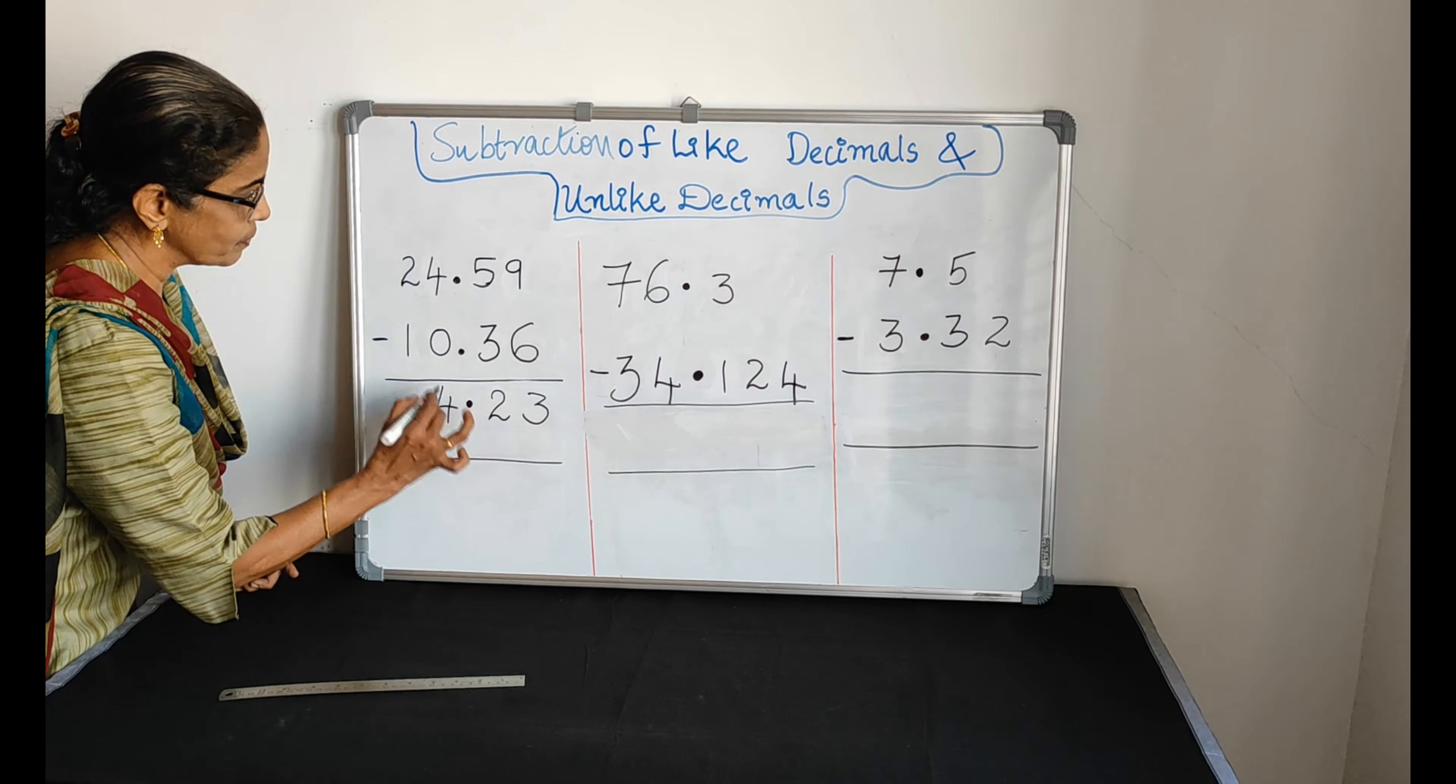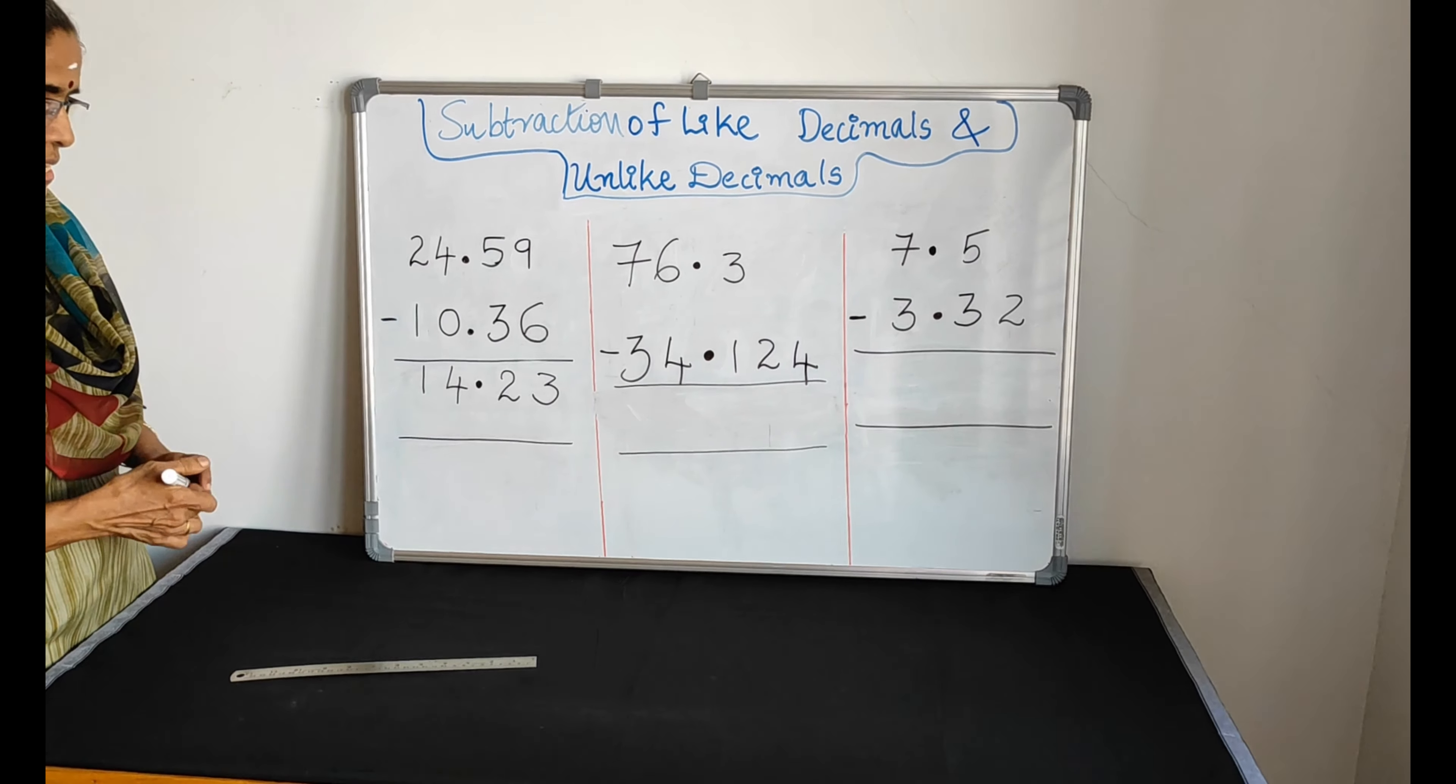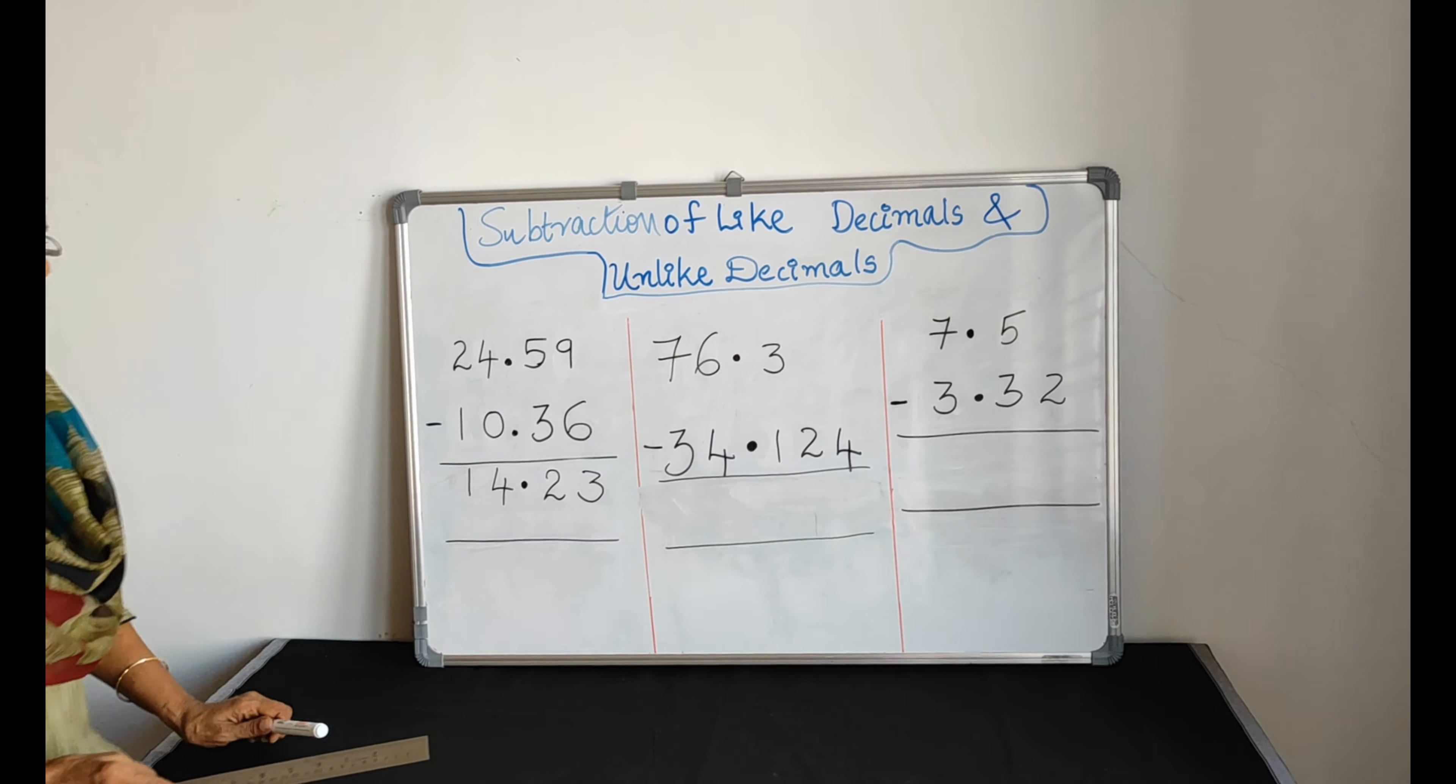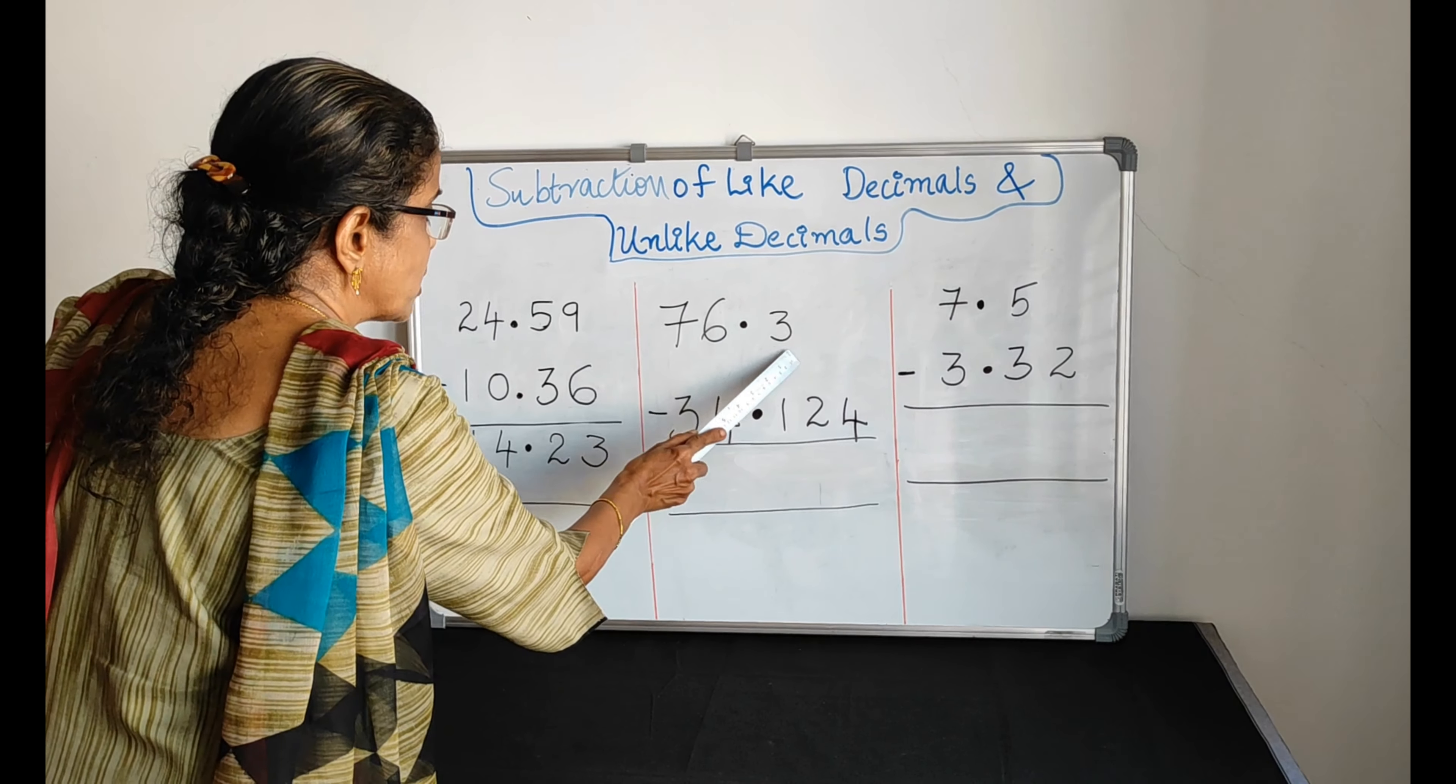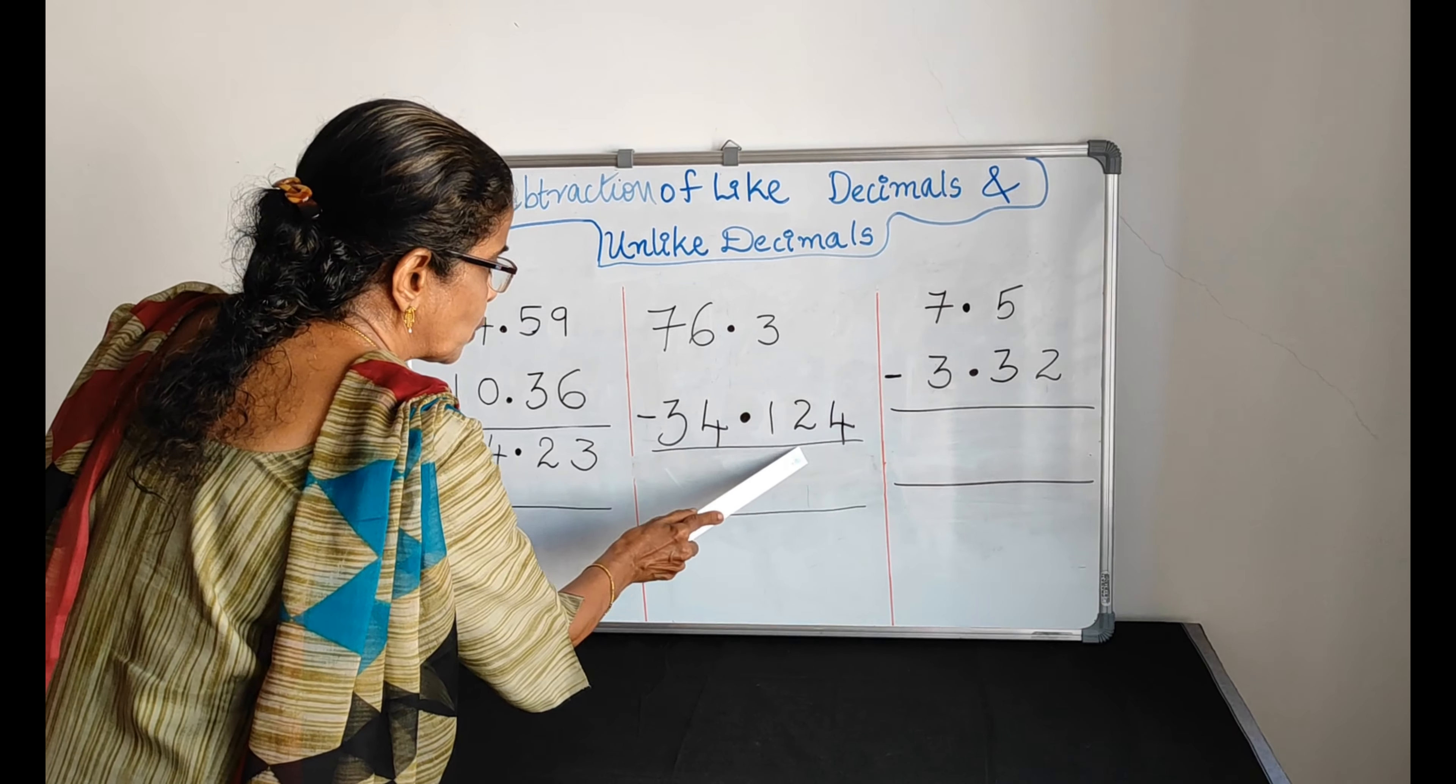Before start doing the subtraction, straight copy the decimal point. Straight down copy the decimal point. Now follow the rule of subtraction. 9 minus 6, 3.